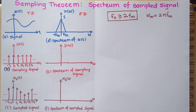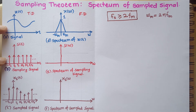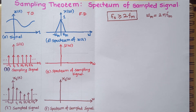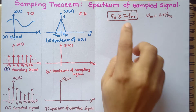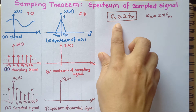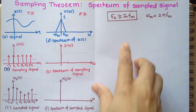In the last lecture we learned the sampling theorem and how sampling is performed in the time domain using a train of impulses for instantaneous sampling. In this lecture we are going to learn the spectrum of the sampled signal. It is very important to study the spectrum of the sampled signal because it allows us to understand the concept of aliasing and to prove the sampling theorem.